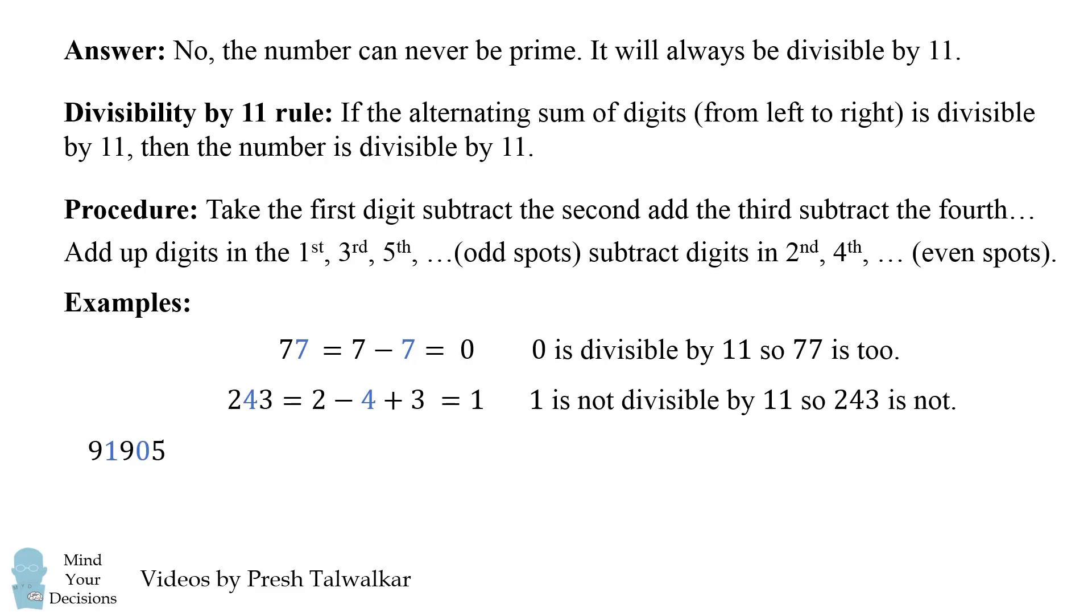What about a more complicated number, like 91,905? We first calculate the alternating sum, which is 22, and then we conclude that 22 is divisible by 11, which means 91,905 is also divisible by 11.